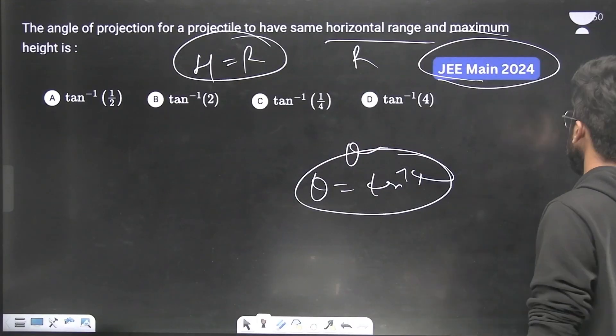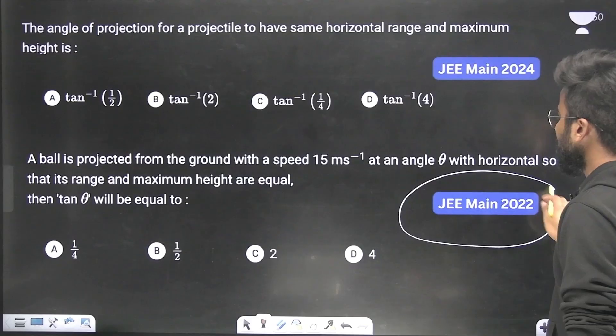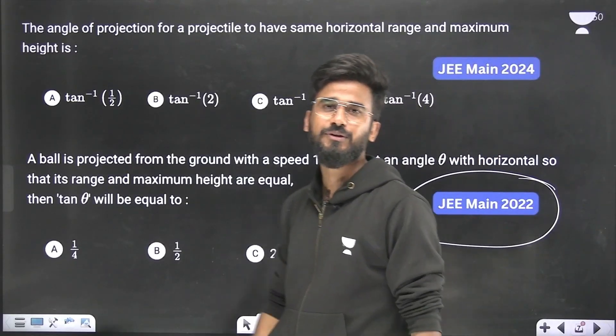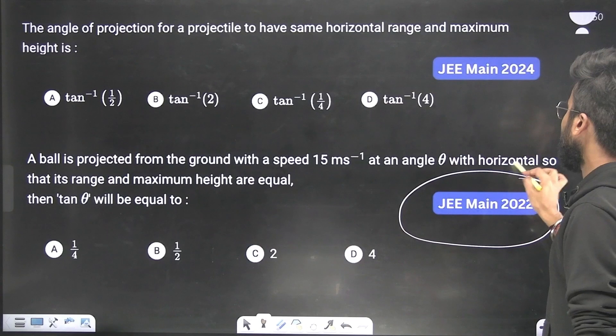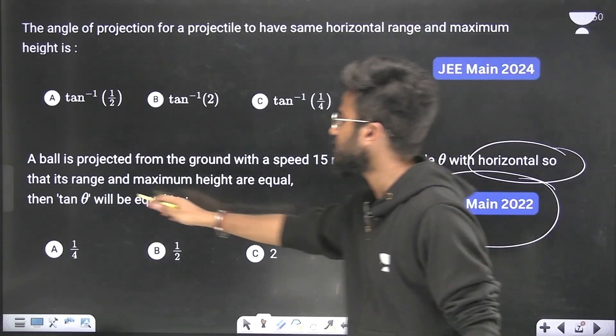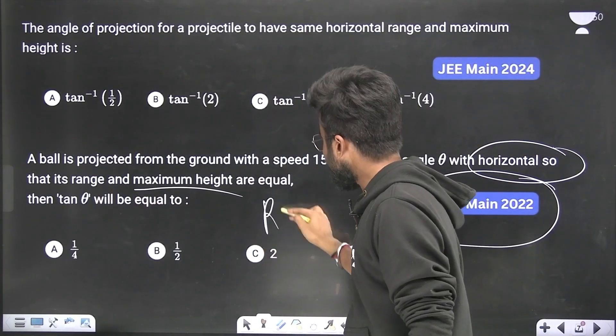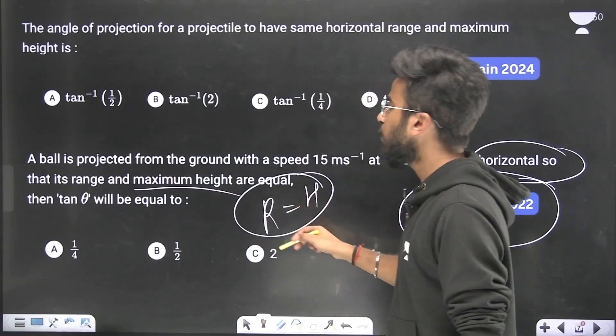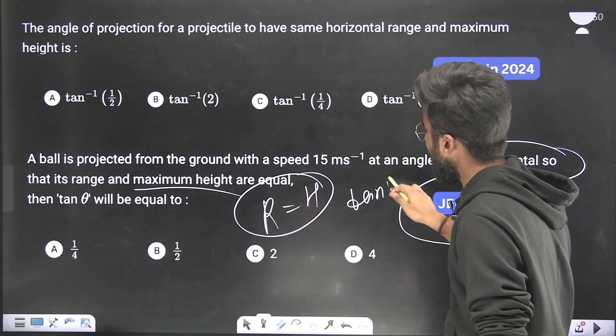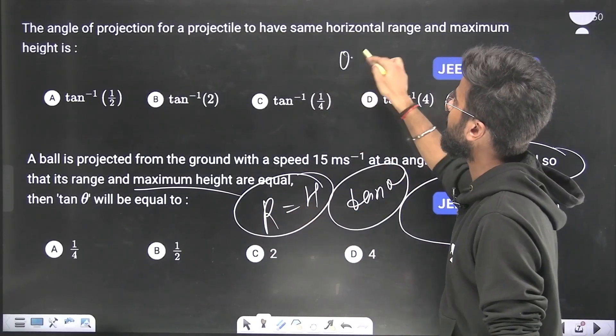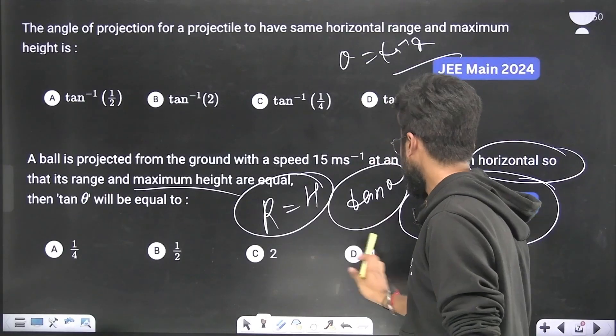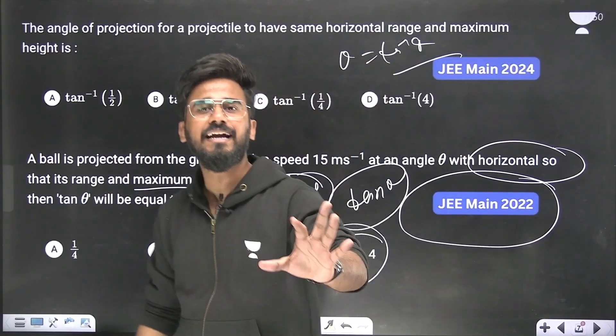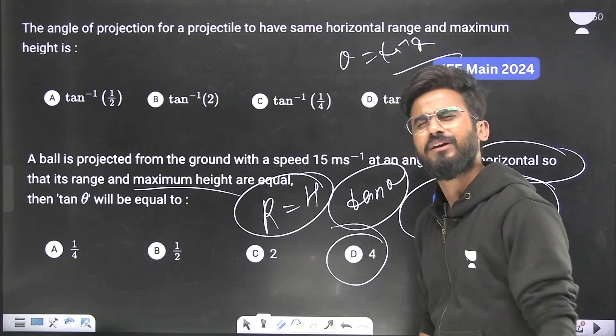I just moved on to the next question, and it was from JEE Main 2022. And it simply said that you have the same data. Like you have the horizontal range and maximum height, those are equal, it means R equals H. And you have to find the value of tan theta. So what was the value of theta here? It was tan inverse 4. It is an identical question. So tan theta will be simply 4, identical question. Again, identical question, same question.